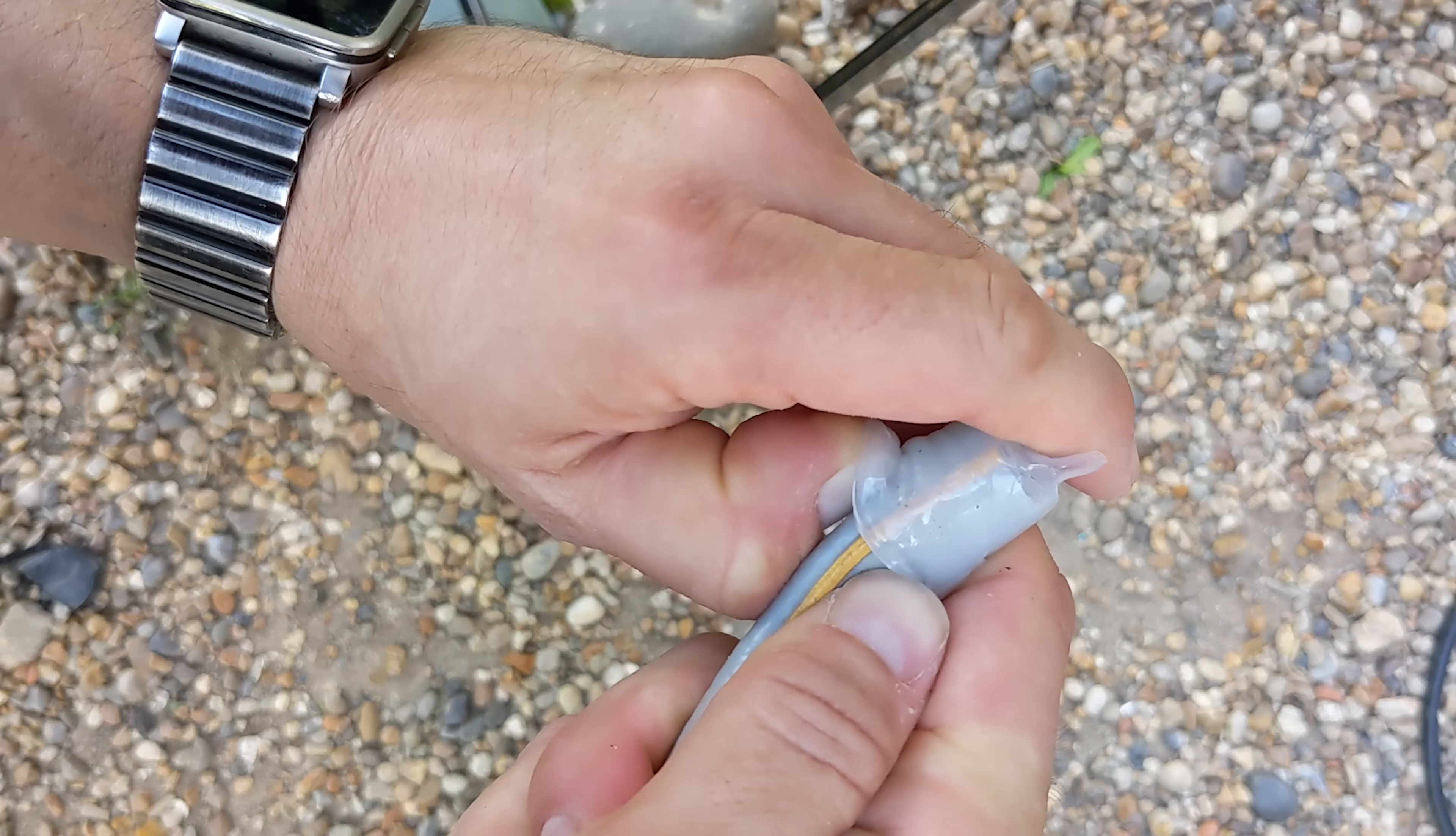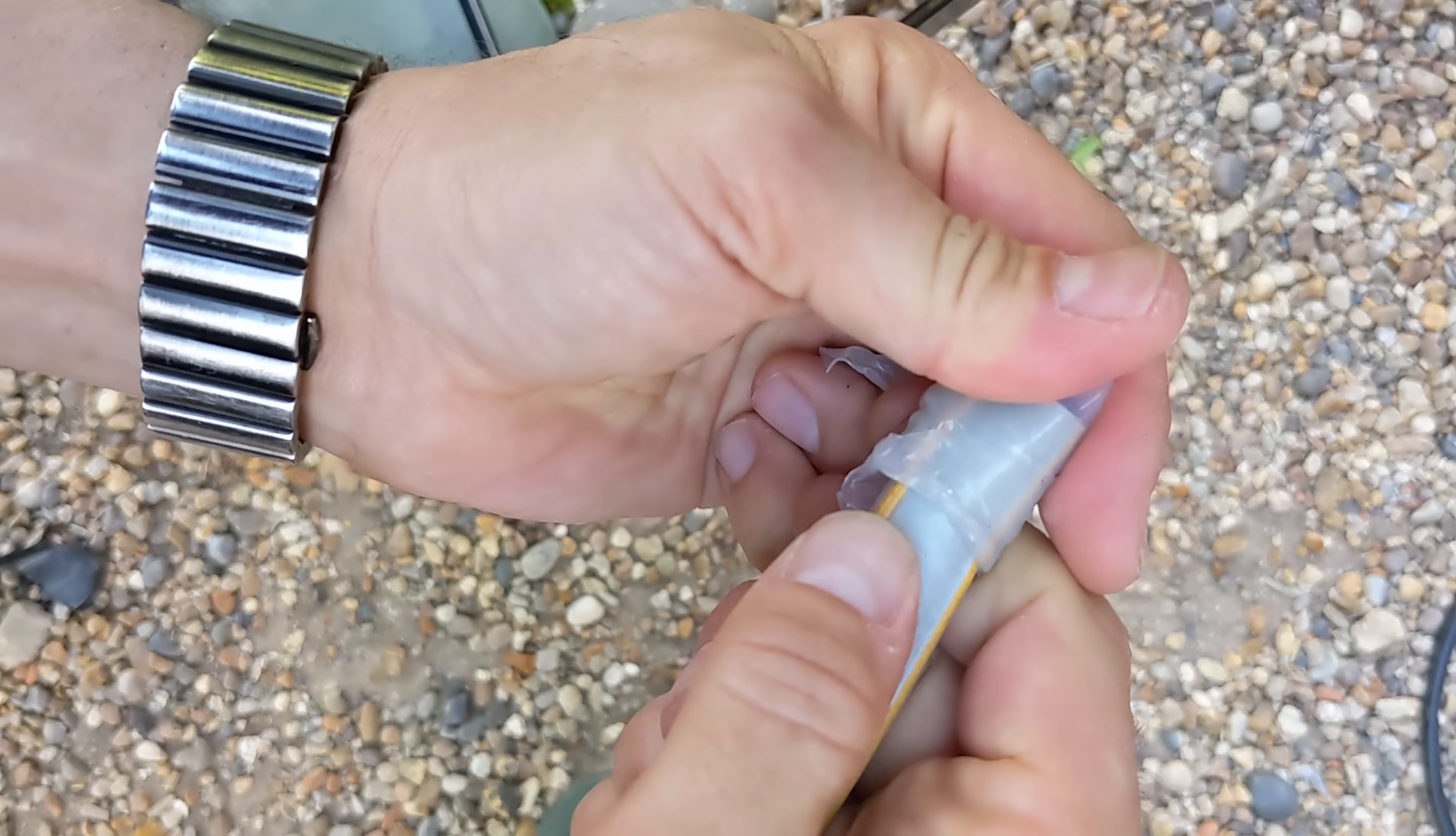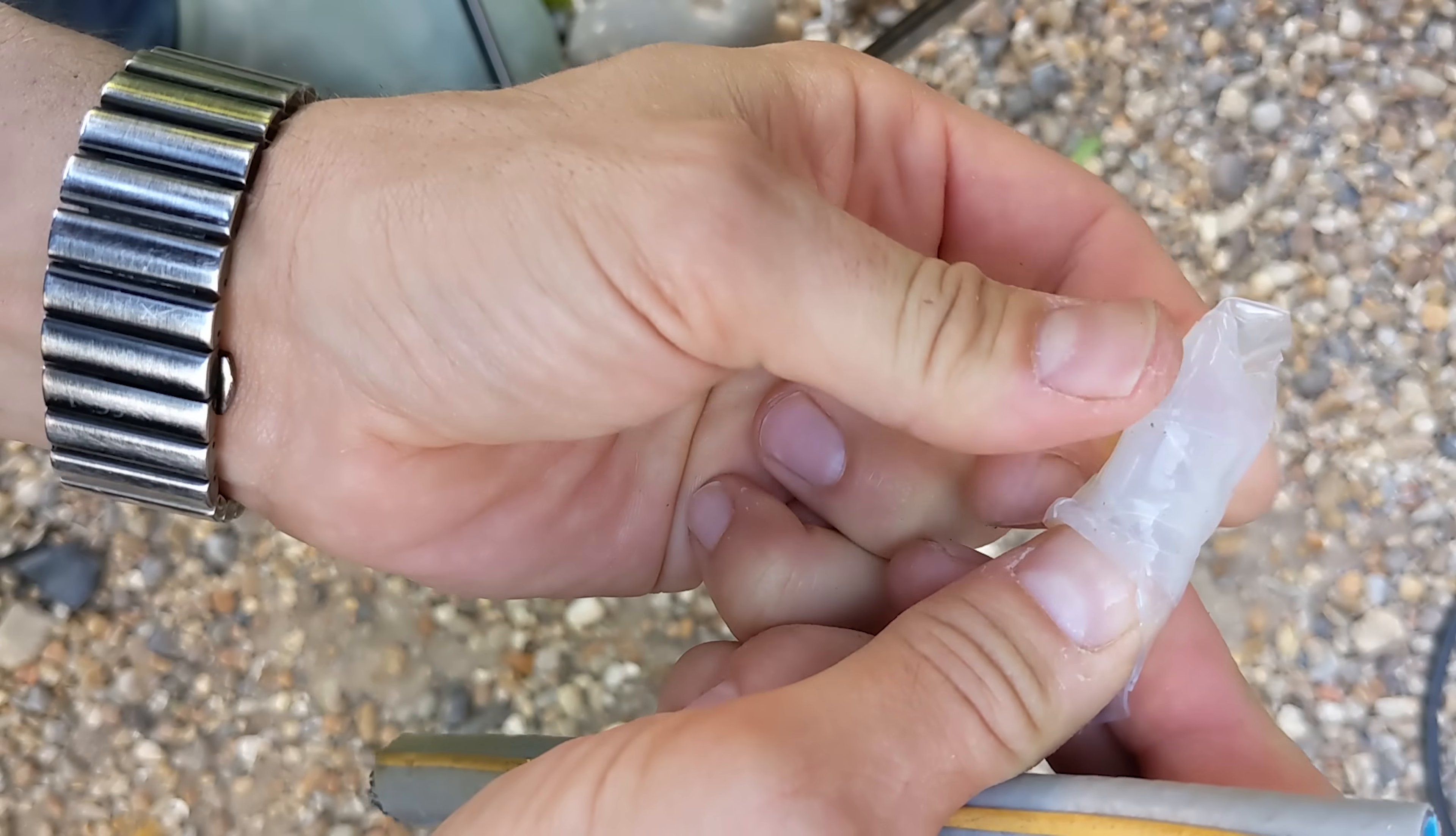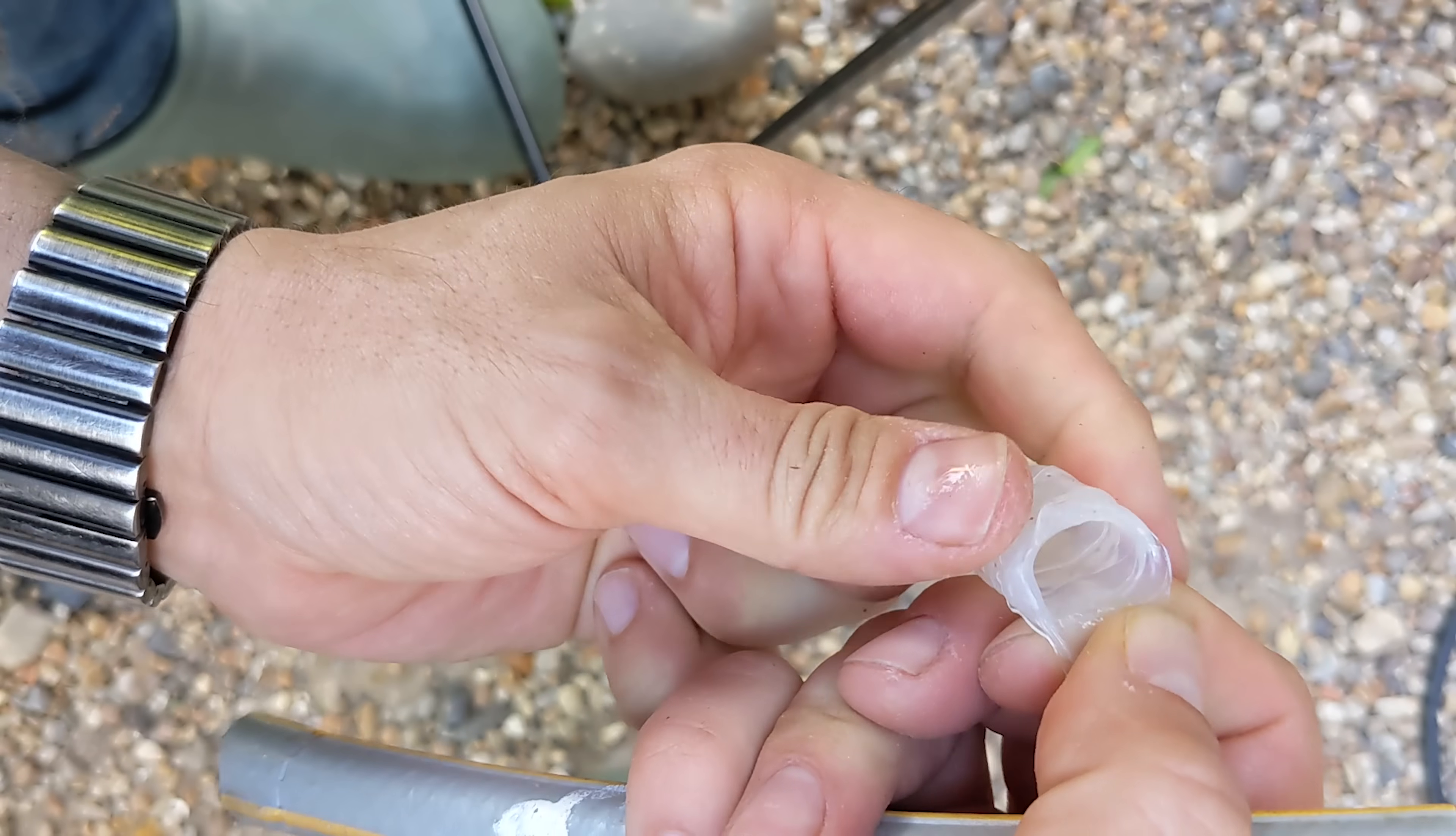You can buy something quite similar from a standard hardware store usually called self-amalgamating tape but the fusing isn't quite so good but it's a similar idea.